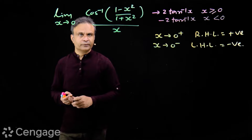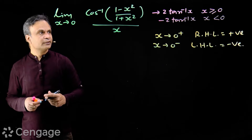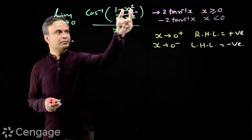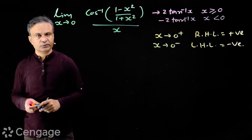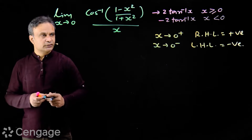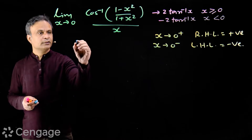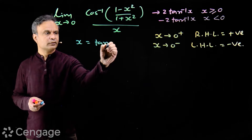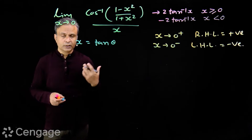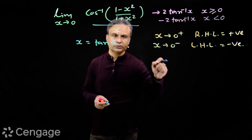Let us derive this formula. We have (1 - x²)/(1 + x²). The substitution we use is x = tan θ, because (1 - tan²θ)/(1 + tan²θ) equals cos 2θ.